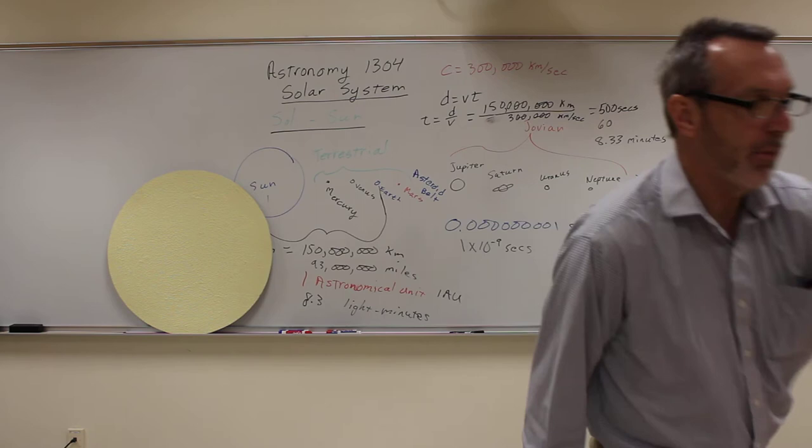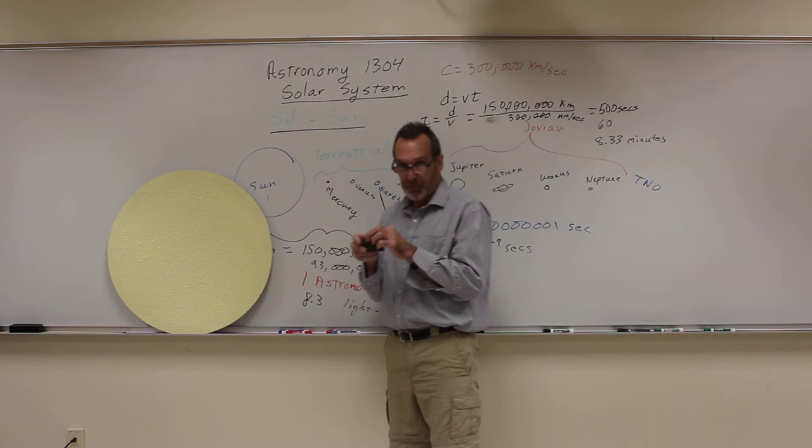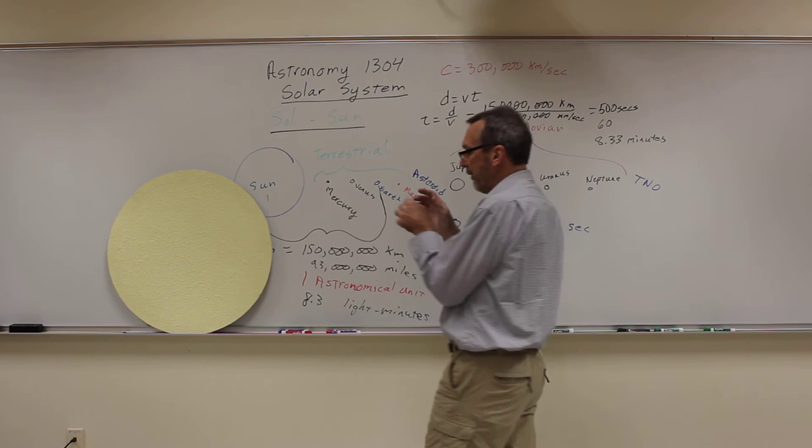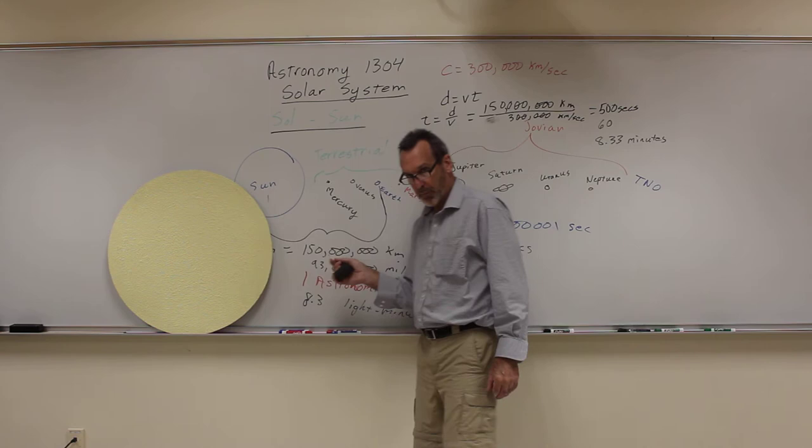The question then is, how big are the planets relative to that sun? And I have models of them here. Here is Mercury. So Mercury is the closest planet. I'm not sure you can see it, but Mercury is that little tiny bead on top of this stand here. This is Mercury. So relative to the sun, that's how big Mercury is. You can see Mercury is so small, it easily gets lost in the face of the sun.